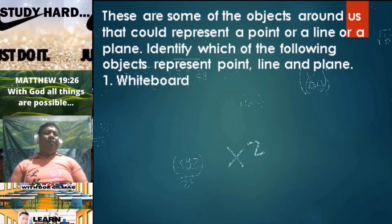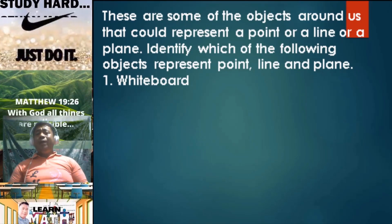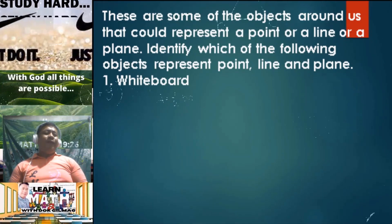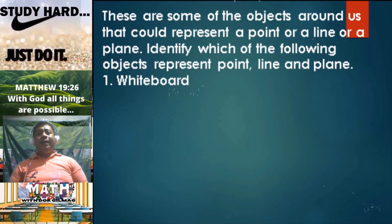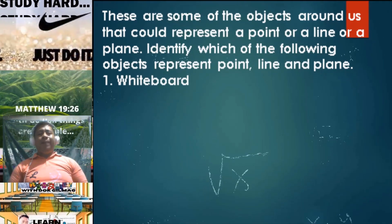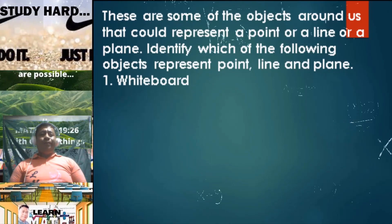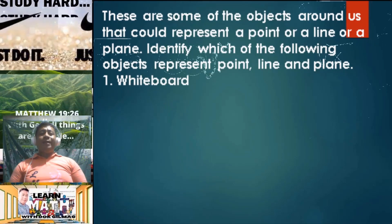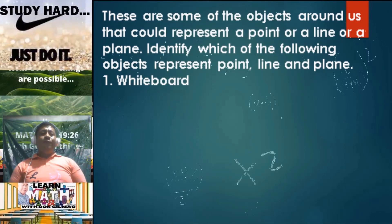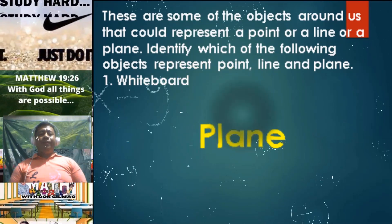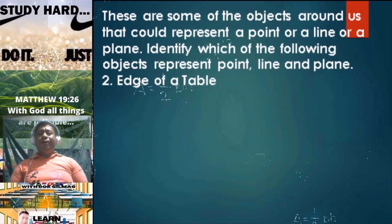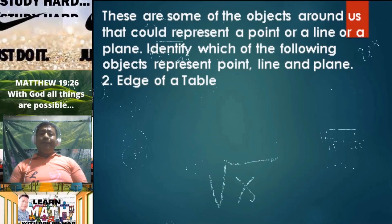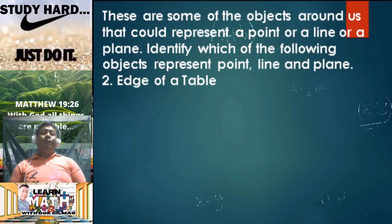These are some of the objects around us that could represent a point, a line, or a plane. Identify which of the following objects represent point, line, and plane. Number one: whiteboard — whiteboard is a representation of a plane. Number two: edge of a table — edge of a table is a representation of a line.